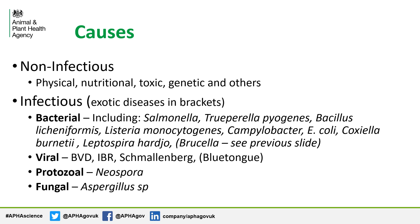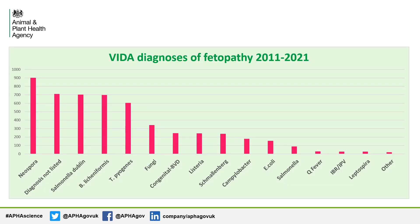There are many different causes of abortion. We can consider them in two categories: non-infectious, for example genetics, trauma, and toxic causes including plants and drugs; and then the infectious causes, which are divided into bacterial, viral, protozoal and fungal. This graph is taken from our Vida database, which includes diagnoses from APHA and SRUC. It illustrates our most commonly diagnosed causes of abortion, with Neospora, Salmonella Dublin and Bacillus Licheniformis as our top three.